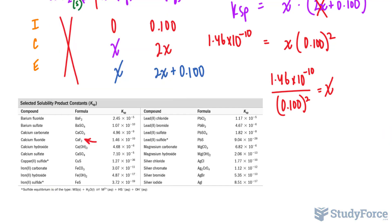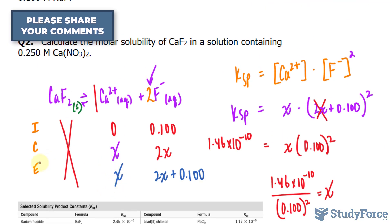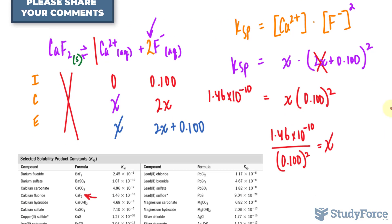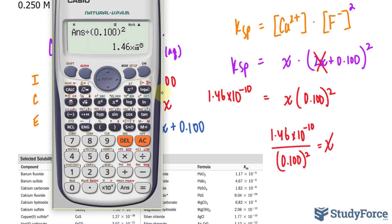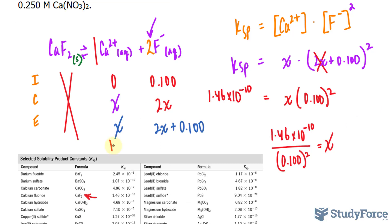And because X represents the equilibrium of calcium 2+, the number that we calculated is the concentration of calcium, 1.46 times 10 to the power of negative 8 molar. And we can substitute that number into X here to find the concentration of fluoride as well.